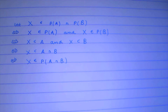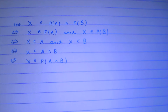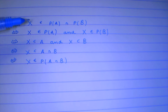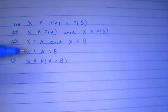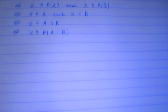So power set of A intersection power set of B is actually equal to the power set of A intersection B. We can go in reverse also — if X is a subset of A intersection B, then X is going to be a subset of A and a subset of B. Since it works both ways, we have a biconditional, a double implication here, and it is just true.